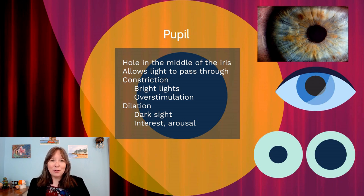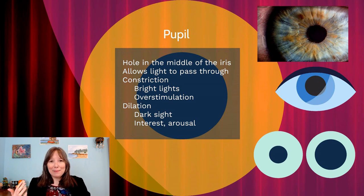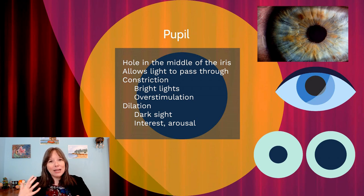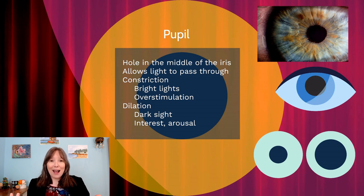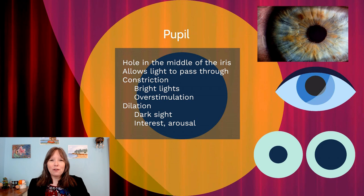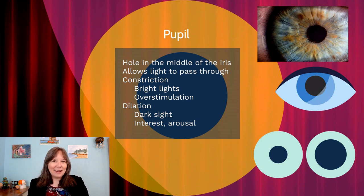Dilation is when the pupil gets larger, such as when you're walking through your house in the dark — it allows you to see better because more light enters your eye. If you're reading in dim light, your pupils will be dilated. We also know that in neutral light, pupils can dilate during physical arousal — like writing a test and needing to take in more information, or during a stressful conversation. Love, interest, and arousal can also cause the eyes to dilate.